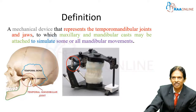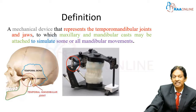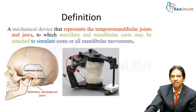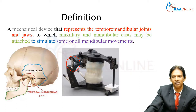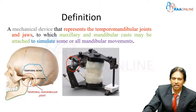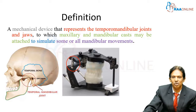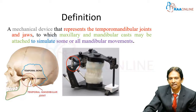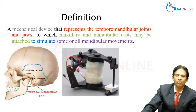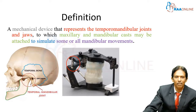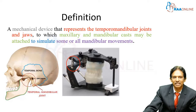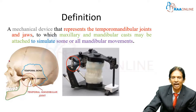Just reading the definition is not so clear, but if you look at the individual meaning, it becomes easy to remember. When we say 'mechanical device,' by looking at the articulator itself, you can see it is indeed a mechanical device — there are locking devices, screws, rods, and a ball joint. So just by looking at the articulator, you know it is a mechanical device.